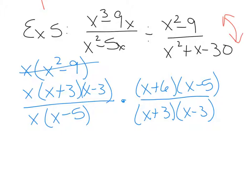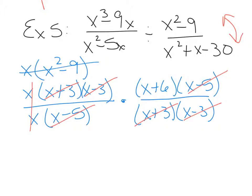Now we have the same rules as before. Since we've changed to multiply, you can cancel any factors vertically or diagonally. The x's cancel, x plus 3 cancels, x minus 3 cancels, and x minus 5 cancels. Everything cancels except x plus 6, so our final answer is x plus 6.